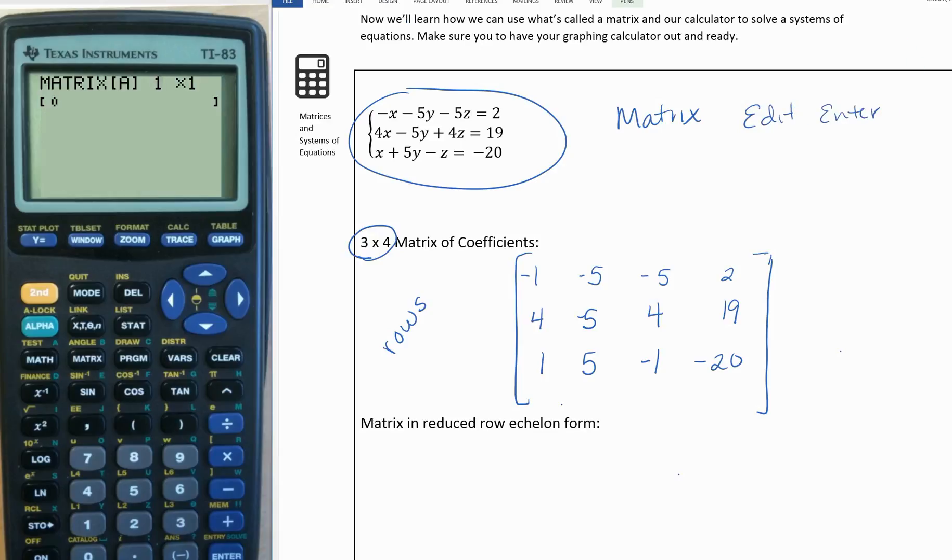Go over to edit and hit enter. Now we're going to put in our dimensions. Since we have three equations and three unknowns, we'll do 3 by 4, and you'll see it changes and gives you enough spots.